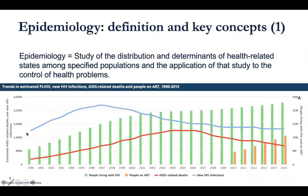Epidemiology is the study of the distribution and determinants of health-related states — what we typically call diseases, although they could be events as well — among specified populations, and the application of that study to the control of health problems.